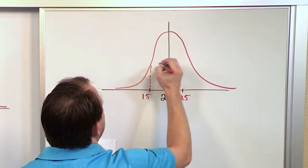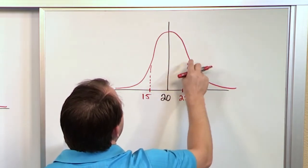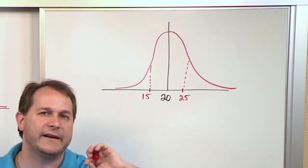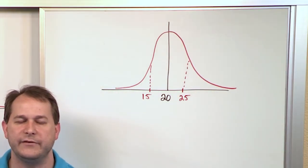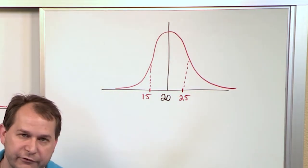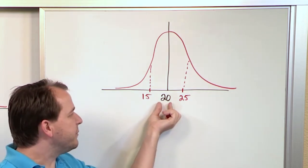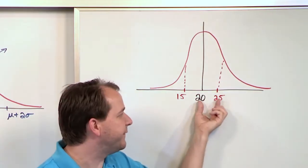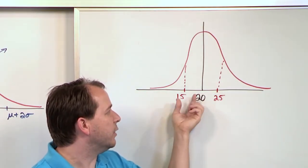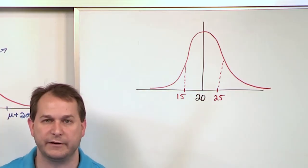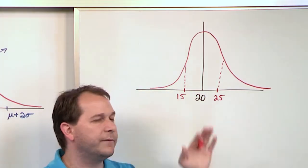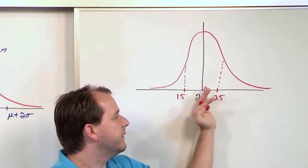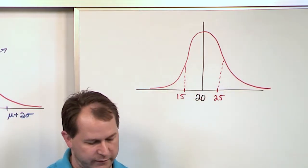If I just give you this curve and ask you what's the standard deviation of this probability distribution, what would you say? Well, you know the mean is here. From the mean up to the inflection point is one standard deviation above the mean, and that's five. And this is five below, again to the inflection point. So the standard deviation in this particular graph would be five. When you say a standard deviation of five, it's five above the mean and five below the mean as drawn on the graph.